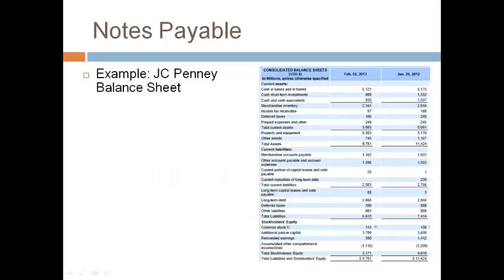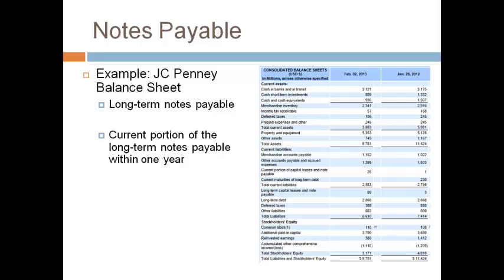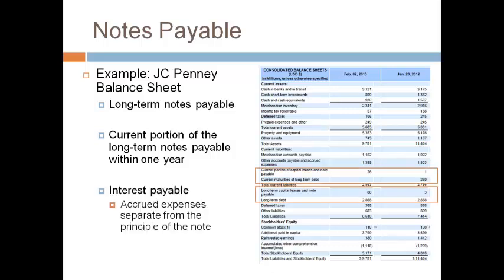Take a moment and look at the balance sheet of JCPenney and notice the line items related to notes payable. Notes payable is a liability owed to creditors. It is reported as long-term debt and as current portion of long-term debt or notes payable. Interest payable is reported separate from principal and is included in accrued expense.